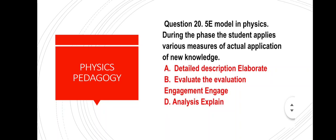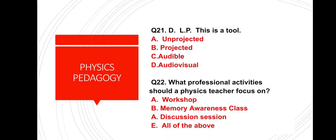Question number 21: DLP — digital light processing — is which type of tool? Options: unprojected, projected, audible, audio-visual. The correct answer is option B — projected aids.